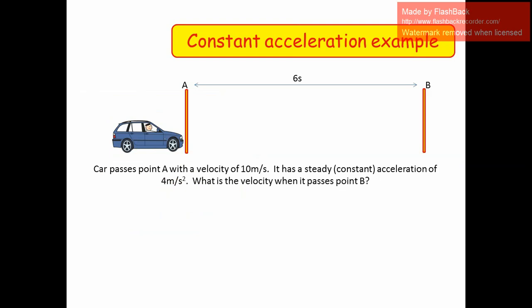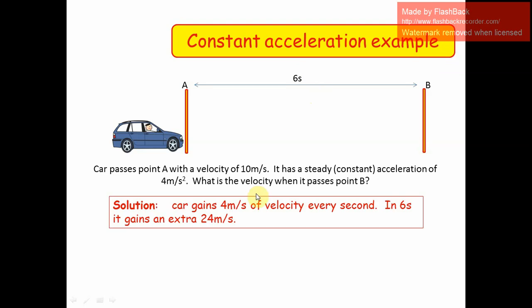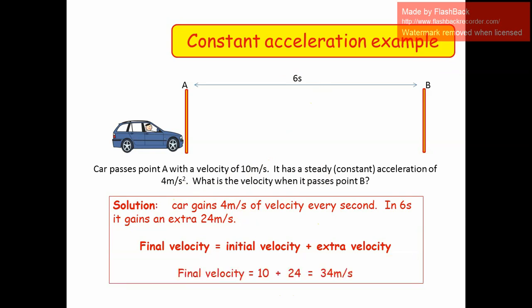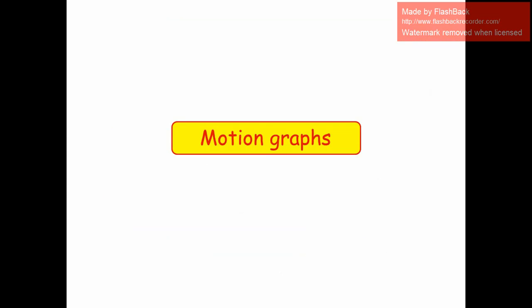Sometimes an object may have constant acceleration. For example, a car passes point A with a velocity of 10 meters per second and a steady constant acceleration of 4 meters per second squared. When it reaches point B after 6 seconds, the gain in velocity is 4 times 6, which equals 24 meters per second. So the final velocity is the initial velocity plus the gained velocity: 10 plus 24 equals 34 meters per second.